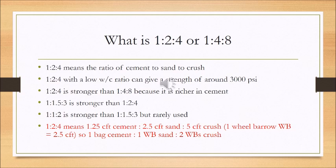The mix ratio is simply the ratio of cement to sand to crush — for example, 1:2:4, where 1 is cement, 2 is sand, and 4 is crushed aggregate. This ratio is by volume, not by weight. A 1:2:4 mix is stronger than a 1:4:8 mix because it is comparatively richer in cement.